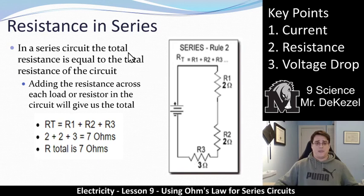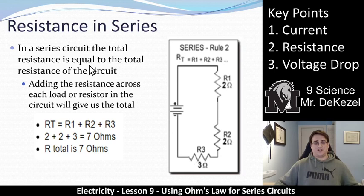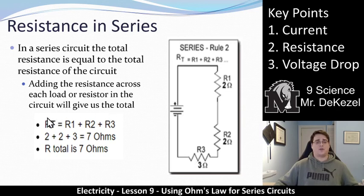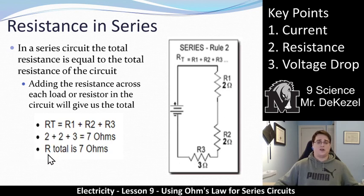Resistance in series: in a series circuit, the total resistance goes up if you add resistors. The total resistance is equal to the sum of all the resistors. So RT = R1 + R2 + R3. We have 2 + 2 + 3, which gives 7 ohms. So if you're given resistances, you can just add them up and that is the resistance for the entire circuit.